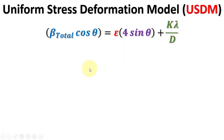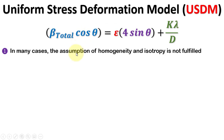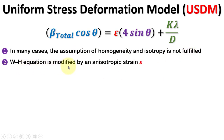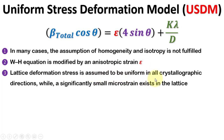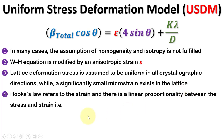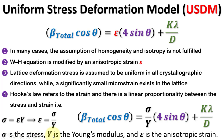Now we discuss the Uniform Stress Deformation Model, in short USDM. The assumption of homogeneity and isotropy may not be fulfilled always, so the WH equation needs to be modified by an anisotropic strain epsilon. Although the lattice deformation stress is assumed to be uniform in all crystallographic directions, a significantly small microstrain exists, which leads to the linear proportionality between stress and strain: sigma equals epsilon times Y, which implies epsilon equals sigma over Y. Sigma is the stress, Y is the Young's Modulus, and epsilon is the anisotropic strain.